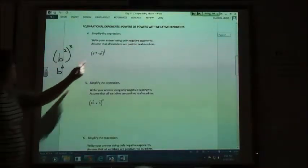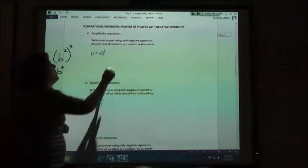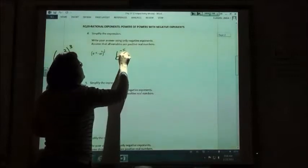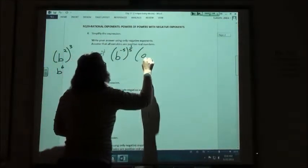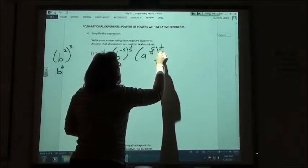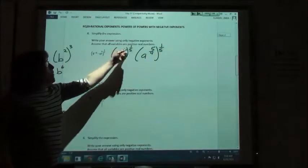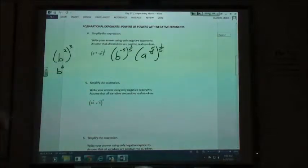Same rule applies, we just have fractions here. So I'm going to take b to the negative fifth and raise it to the one-fifth power and a to the five-fourths and raise it to the one-fifth power. So I'm going to multiply my exponents. When I take negative five times positive one-fifth, what would I get?